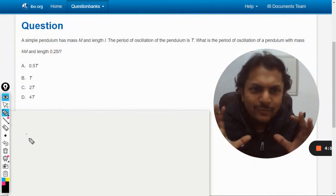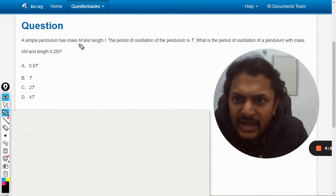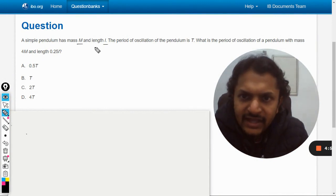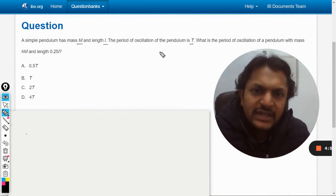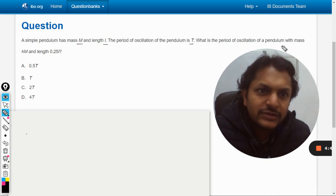Okay dear students, let us see what is there in this question. A simple pendulum of mass m and length L. The period of oscillation of the pendulum is capital T. What is the period of oscillation of the pendulum